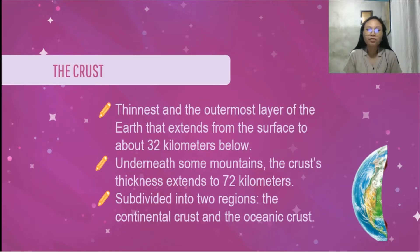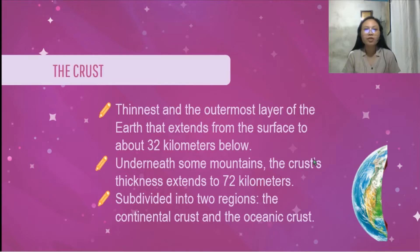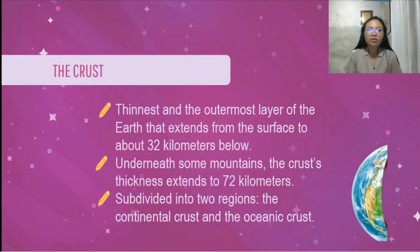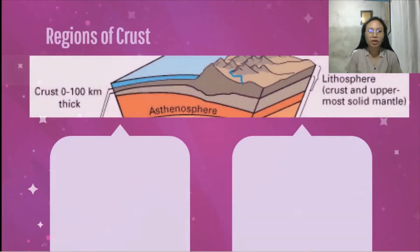If the place of the earth has mountains and volcanoes, the thickness of the crust is thicker. And if the place of the earth is a field, it is thinner. The crust is subdivided into two regions: the continental crust and the oceanic crust.